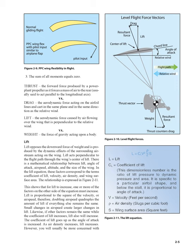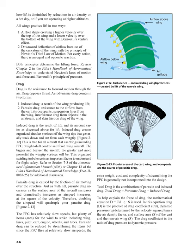For lift to increase, one or more of the factors on the other side of the equation must increase. Lift is proportional to the square of the velocity, or airspeed; therefore, doubling airspeed quadruples the amount of lift if everything else remains the same. Small changes in airspeed create larger changes in lift. If other factors remain the same while the coefficient of lift increases, lift also increases. The coefficient of lift goes up as the angle of attack is increased. As air density increases, lift increases; however, you will usually be more concerned with how lift is diminished by reductions in air density on a hot day or at higher altitudes.